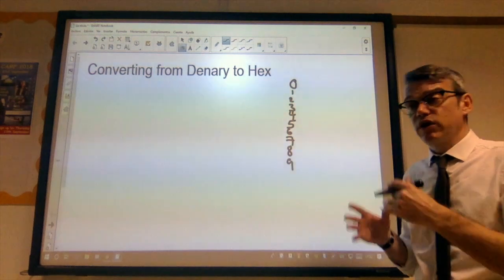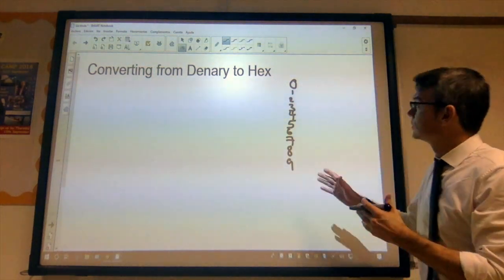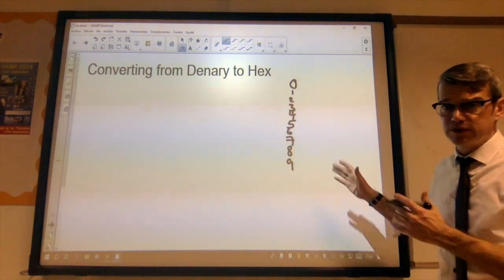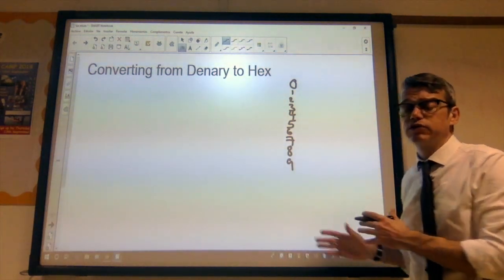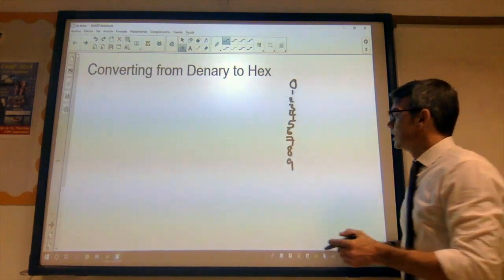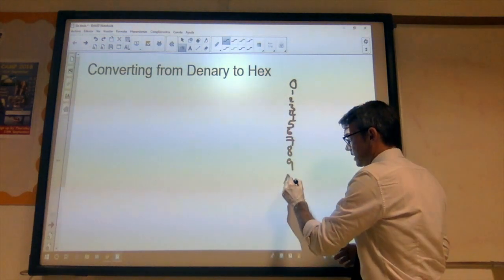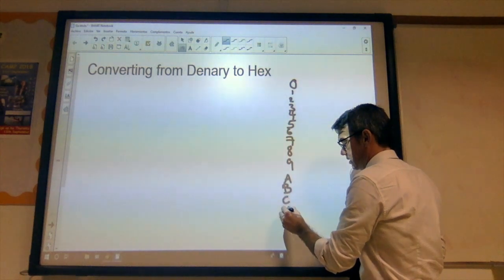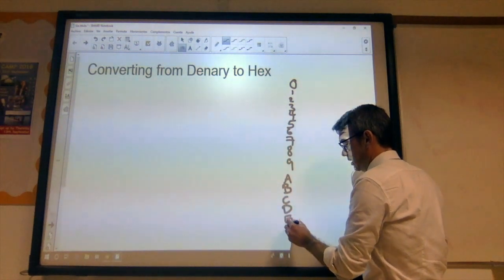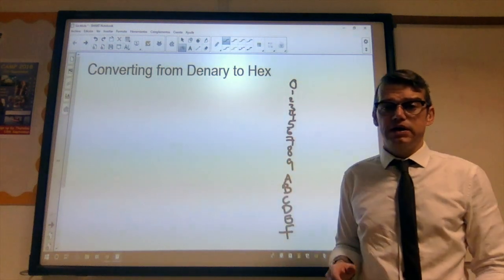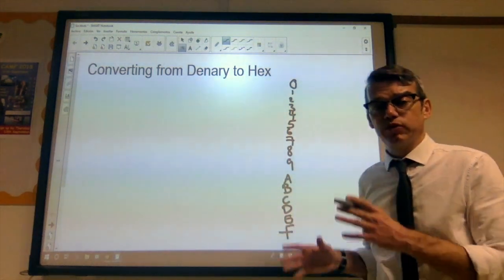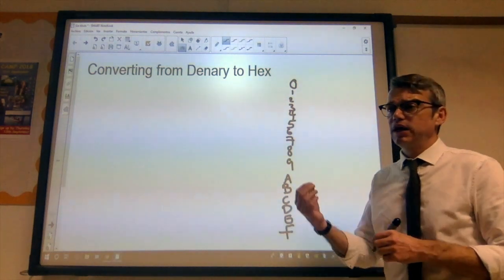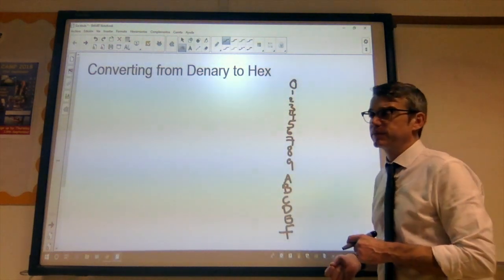Now, the problem is we can't have double digits and we've still got to represent 10 through to 15, because we have 16 possible values. So, what we use are our letters. So, our equivalent of 10 would be A, B, C, D, E and F. And those are our possible values that we can use, or possible symbols really, that we can use in the hexadecimal number system.